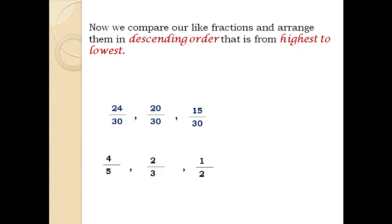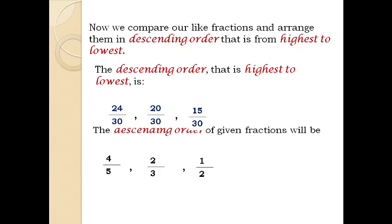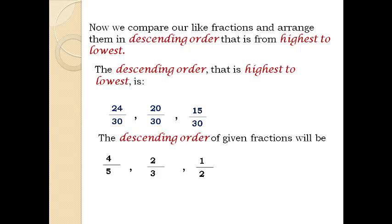For descending order (highest to lowest), the like fractions are arranged as: 24 over 30, 20 over 30, 15 over 30. Therefore the descending order of the given fractions is: 4 over 5, 2 over 3, 1 over 2.